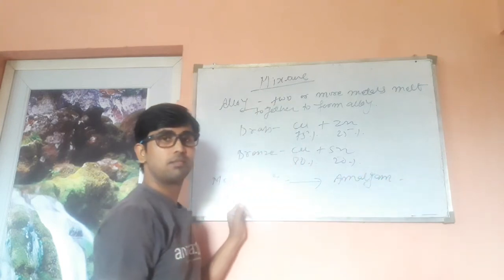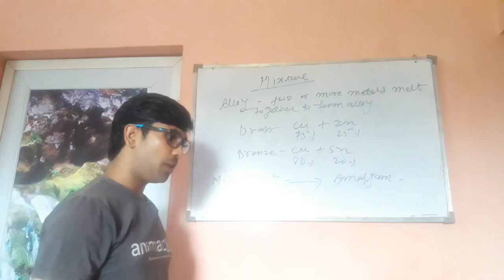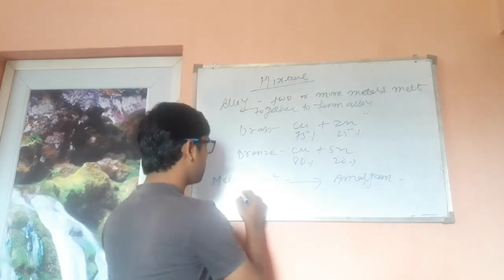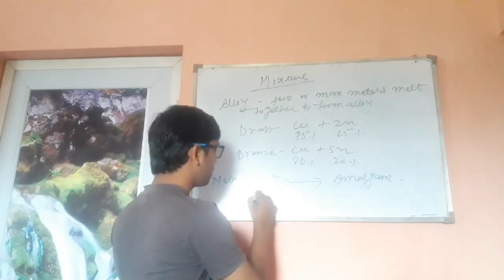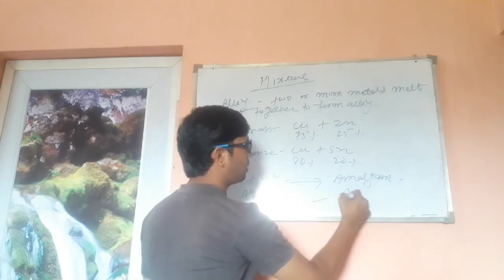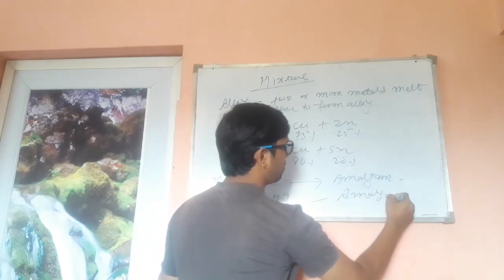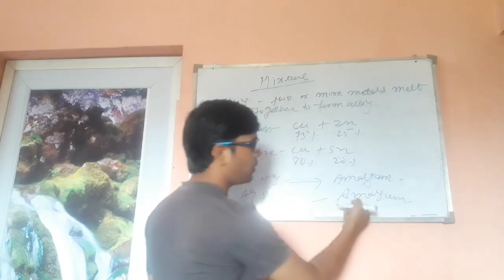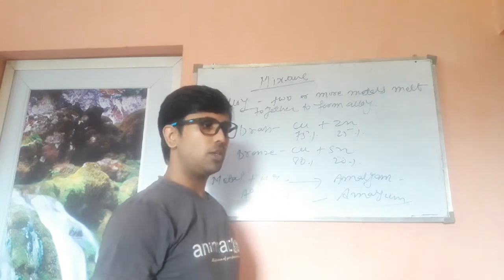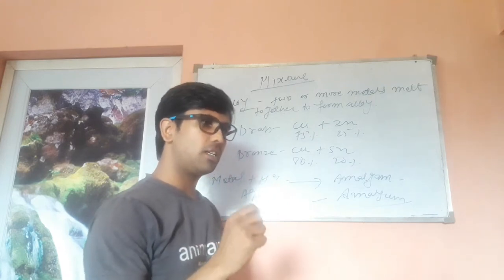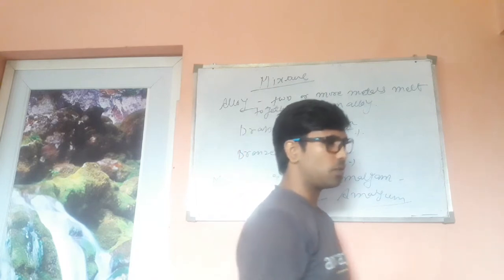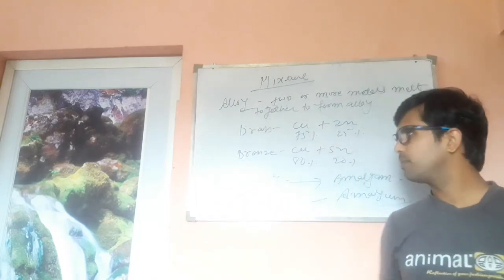When any metal is alloyed with mercury as a constituent, that alloy is called an amalgam. We usually use silver with mercury to form amalgam, and dentists use that amalgam to fill holes in teeth.